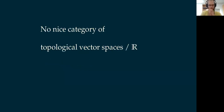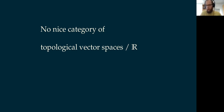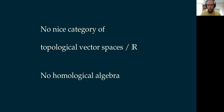So what are liquid vector spaces and why are they interesting? The problem they tried to solve is the fact that we do not really have a nice category of topological vector spaces over ℝ. The categories of Banach spaces, locally convex topological vector spaces, nuclear vector spaces — all these categories you could form in functional analysis — are not abelian categories, and in particular you cannot do homological algebra in them, because homological algebra requires an abelian category.